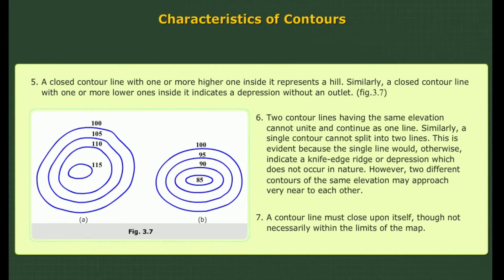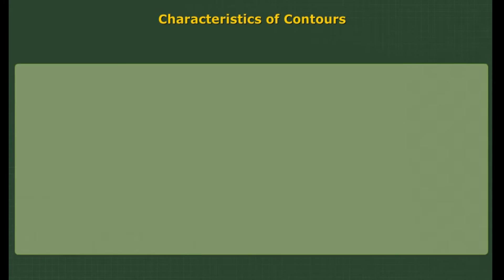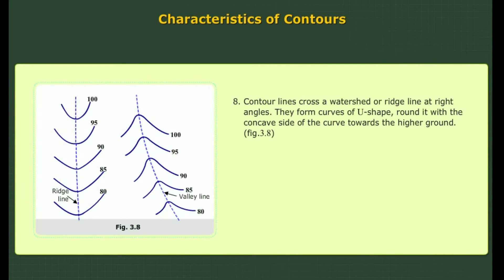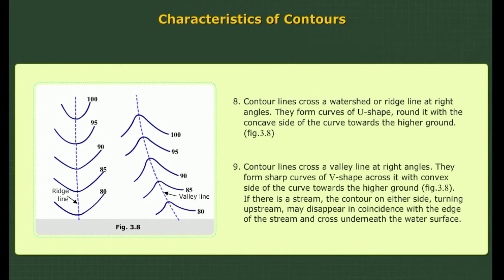7. A contour line must close upon itself, though not necessarily within the limits of the map. 8. Contour lines cross a watershed or ridge line at right angles. They form curves of U shape around it, with the concave side of the curve towards the higher ground. 9. Contour lines cross a valley line at right angles. They form sharp curves of V shape across it, with the convex side of the curve towards the higher ground.